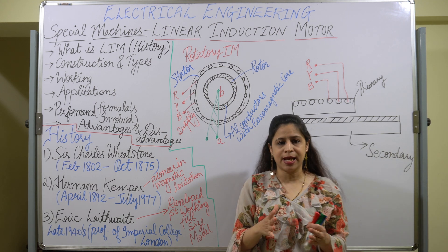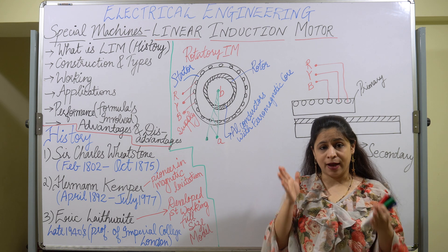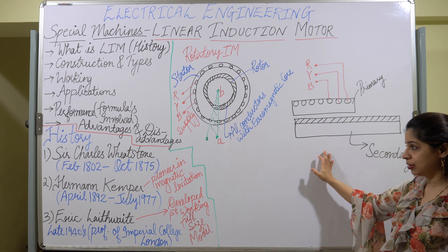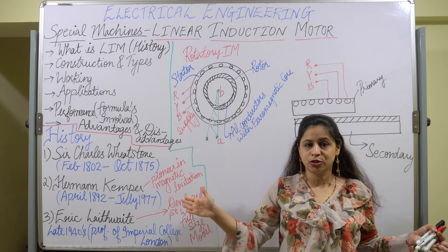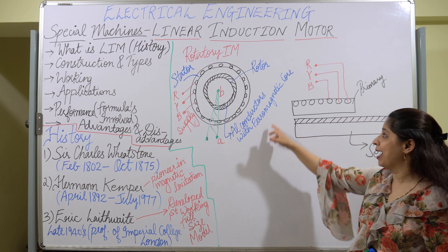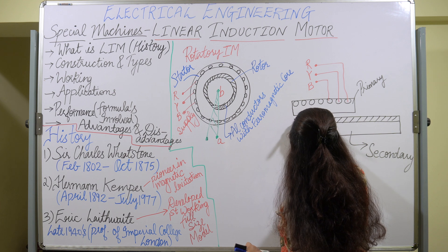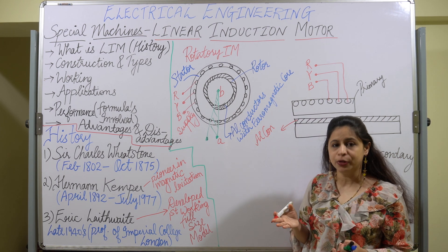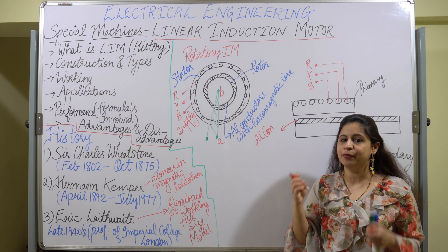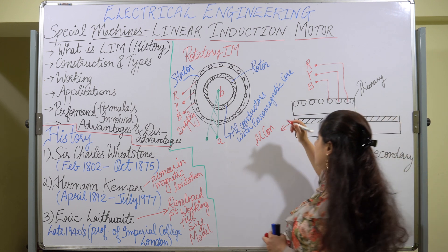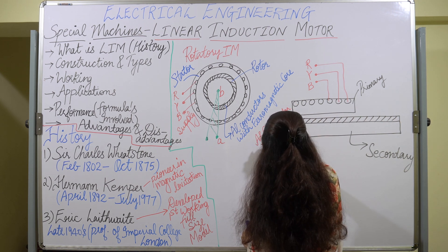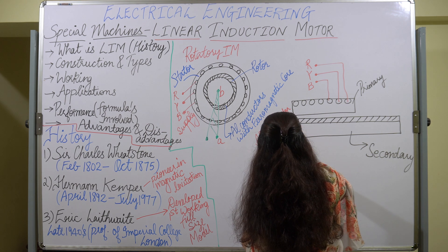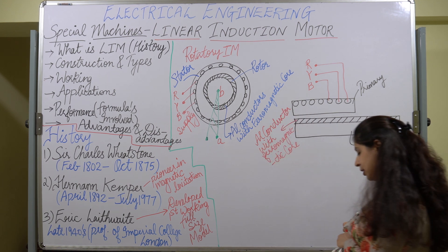The stator of the linear induction motor is straight — it has slots, laminations, but it is completely flat. The rotor is also straight, having aluminium conductors with a ferromagnetic core and slots. The rotor conductor can be any metal — aluminium or copper — but aluminium is the most commonly used conductor. So the rotor has aluminium conductors with a ferromagnetic core.